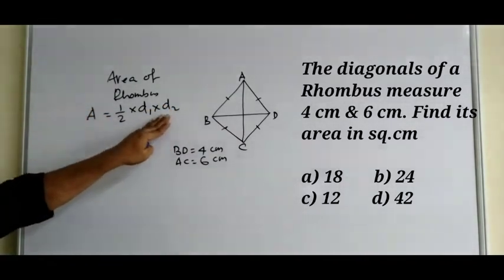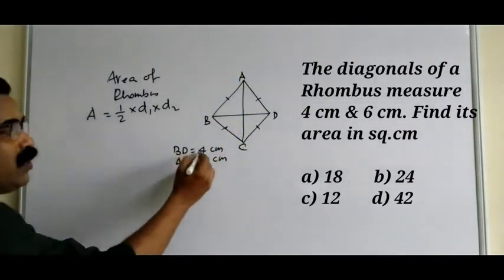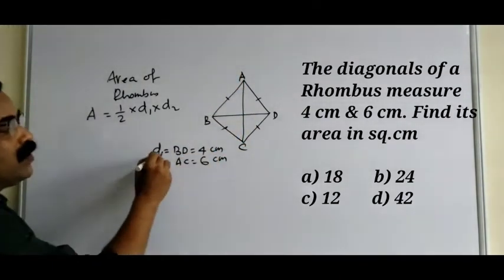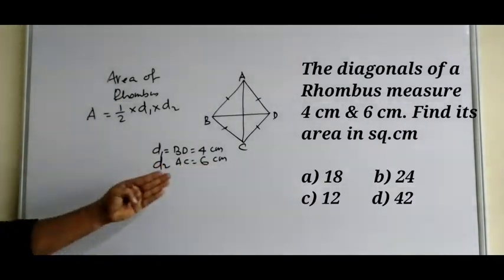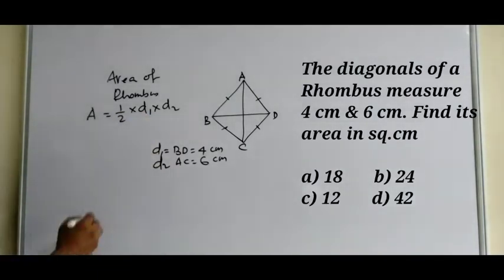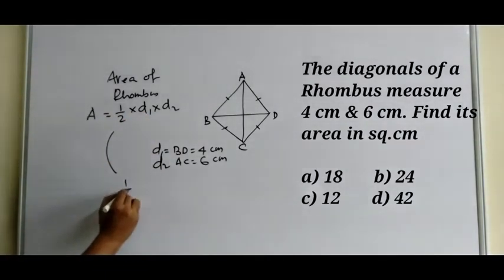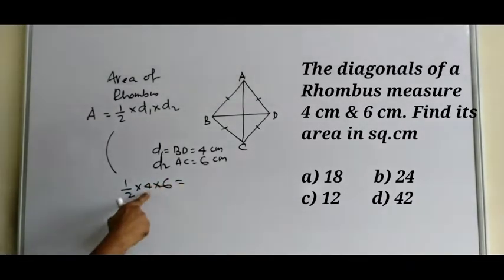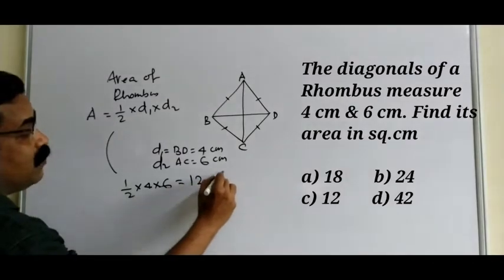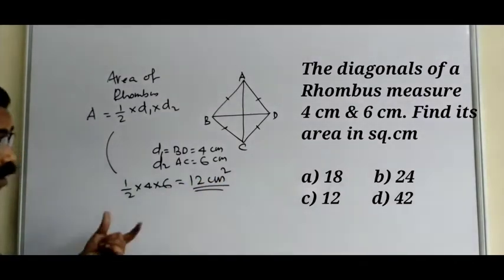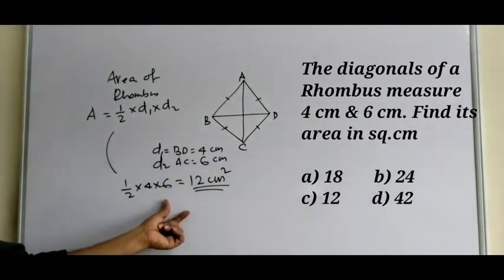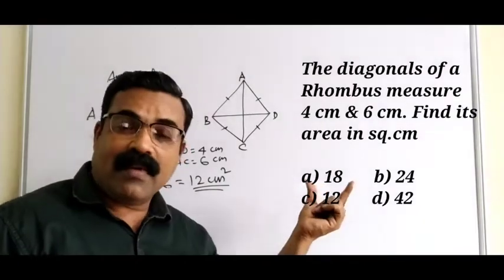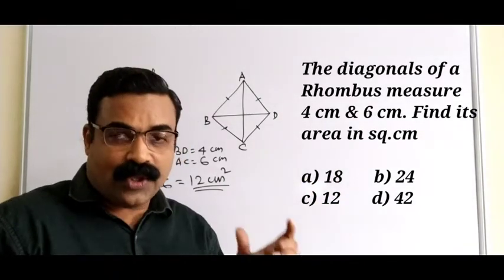Here d1 and d2 are the diagonals of the rhombus. d1 is 4 centimeters and d2 is 6 centimeters. Putting the values into the formula: ½ × 4 × 6 = ½ × 24 = 12 centimeters square. So the area of this rhombus is 12 cm². You can mark the correct option accordingly.